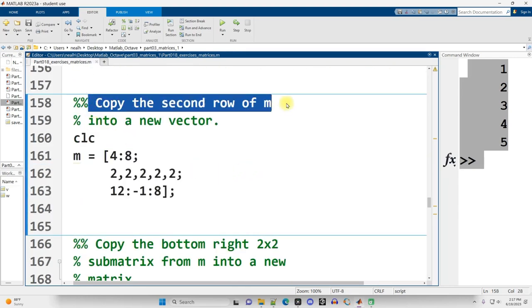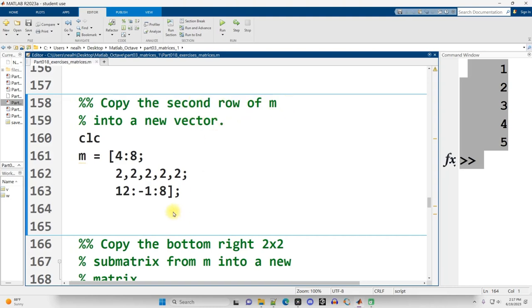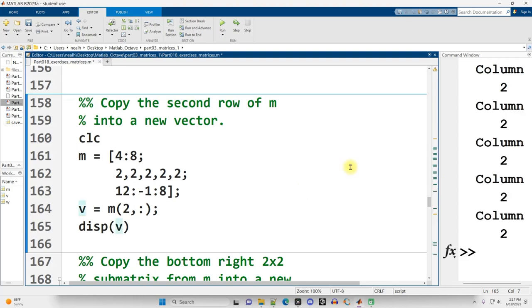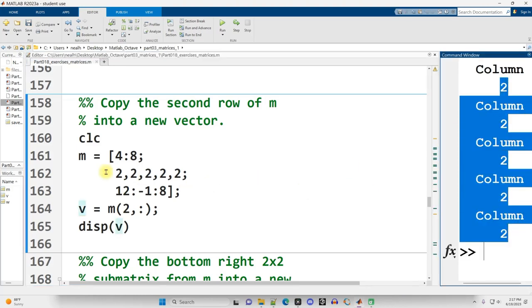Copy the second row of M into a new vector. So V equals from M the values in the second row, comma, colon to represent all columns. And then if I display that out, I'm not going to transpose it, I get, no, sorry, if I display V out, I get all those 2s from that second row.